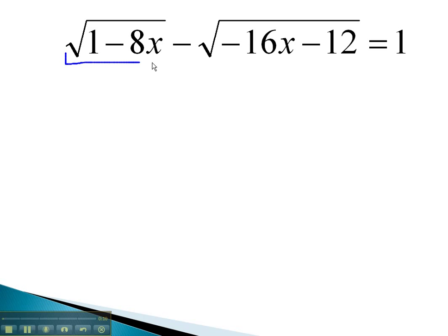In this problem, we can easily isolate the first radical by adding the second radical, the square root of negative 16x minus 12, to both sides.